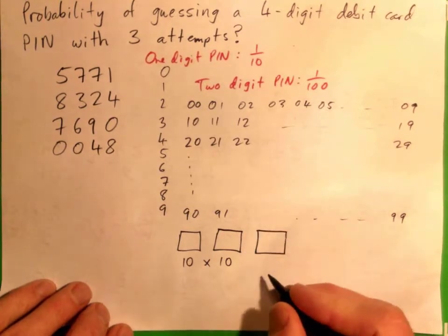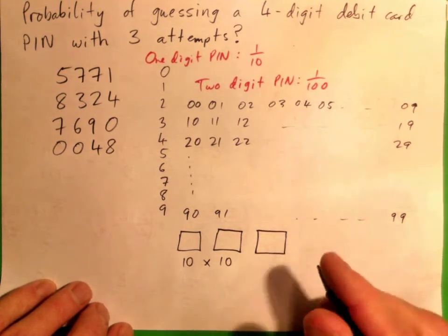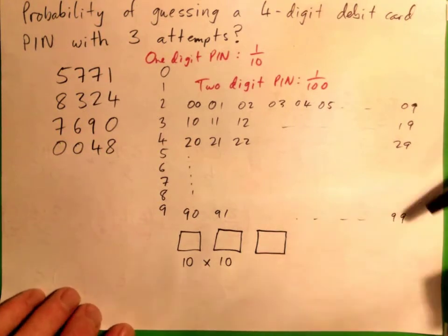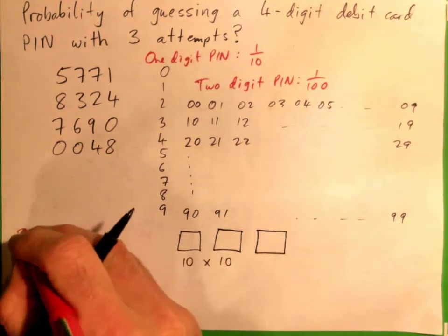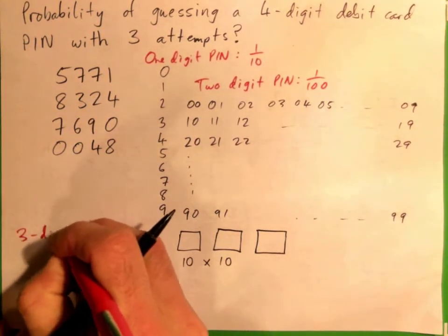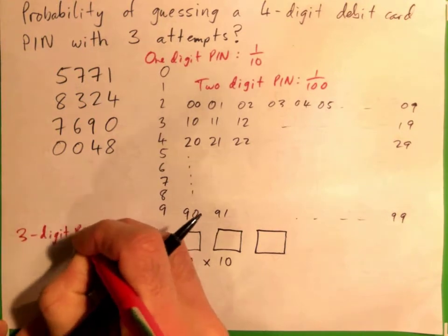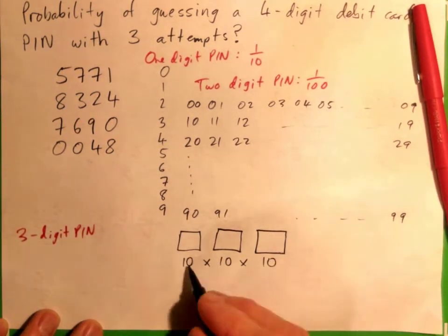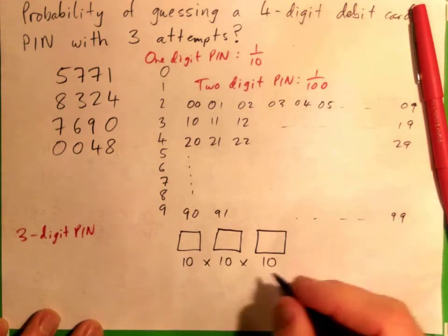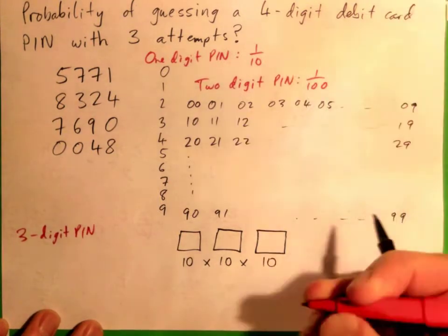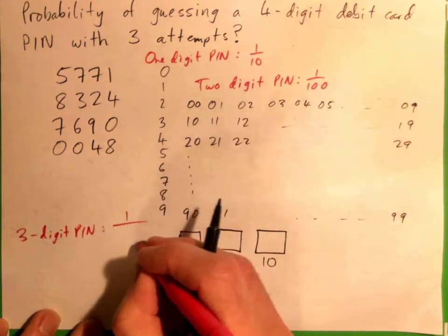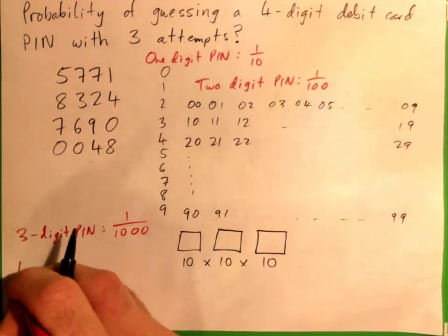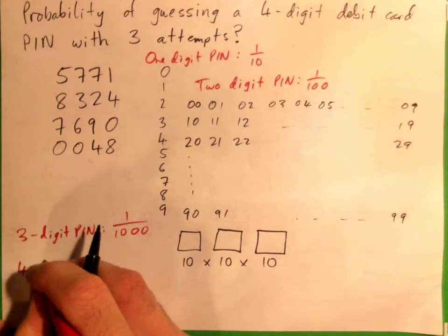For a three-digit PIN, you go ten times ten, which is 100, times ten again — a thousand ways. So to guess a three-digit PIN, the probability is one out of a thousand.